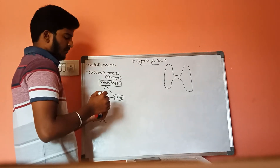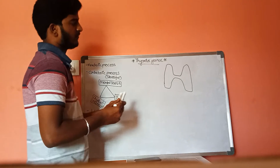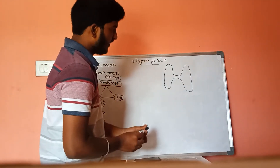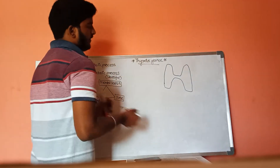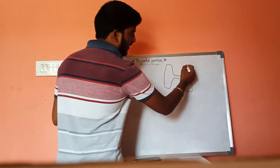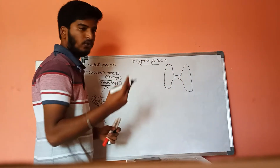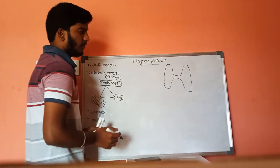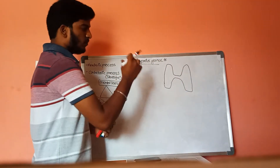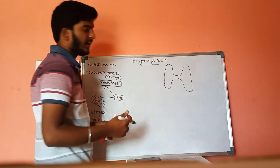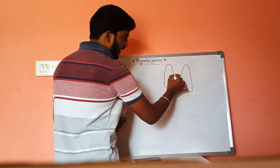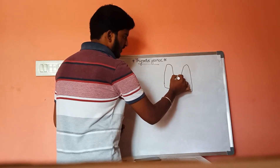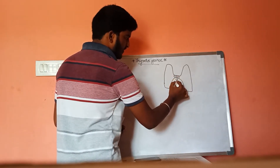This is the structure of thyroid gland. It consists of two lobes — one is the right lobe and the other is the left lobe. These two lobes are internally connected by the isthmus.